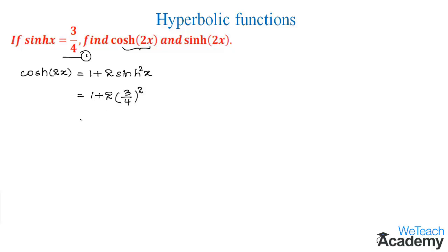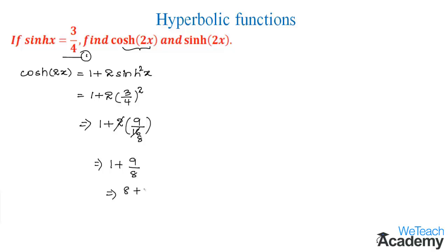We get 1 plus 2 into the square of 3/4, which is 9/16. Simplifying: 2 times 9/16 gives 9/8, so the equation becomes 1 plus 9/8, which equals 8 plus 9 divided by 8, giving us 17/8.